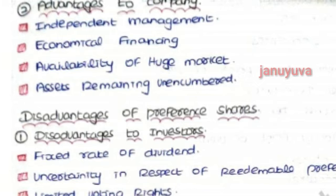The last advantage to the company is that assets remain unencumbered. The burden of asset maintaining is on the preference shareholders. The company can continue and the assets remain free from the burden. That is the asset classification advantage.